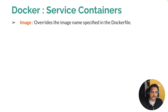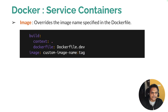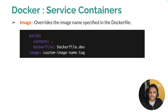The next syntax is image. The image property overrides the image name specified in the Dockerfile. Whatever name you want to declare for your Docker image, you can define it within the image tag. For example, you define build with context set to period (current directory), then specify the dockerfile property with the Dockerfile name such as Dockerfile.dev, and then define the image name. This declares the container image name.